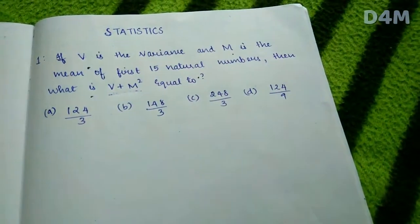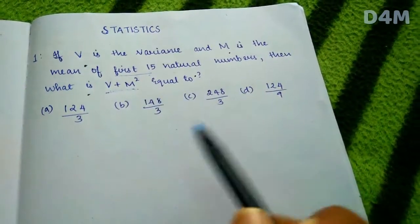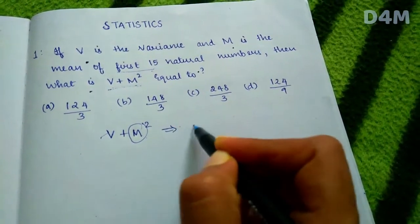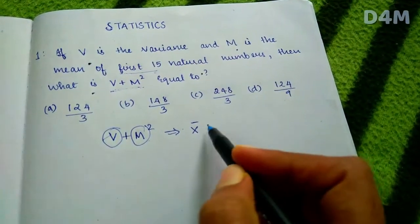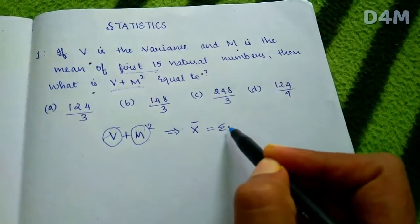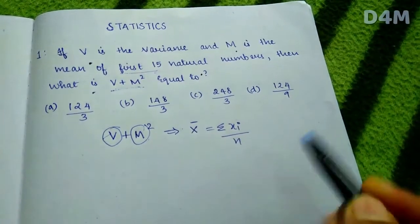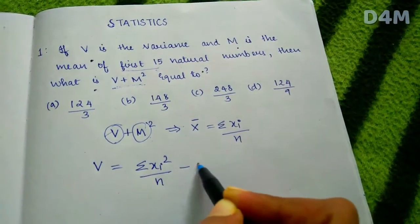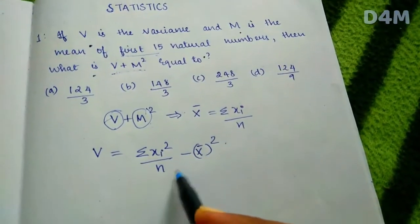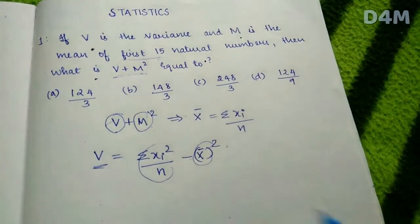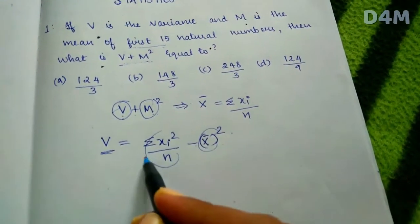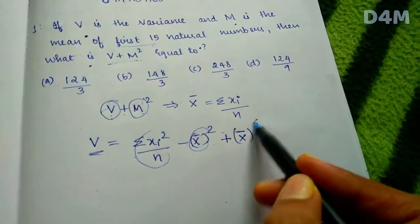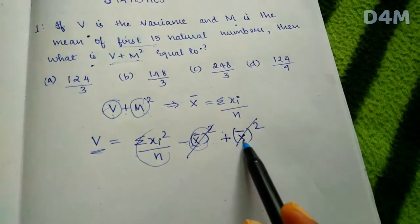V is the variance and M is the mean of the first 15 natural numbers. The variance formula is: sigma squared equals summation of x_i squared divided by n, minus x-bar squared. We need V plus M squared, and since the x-bar squared terms cancel, we get summation of x_i squared divided by n.